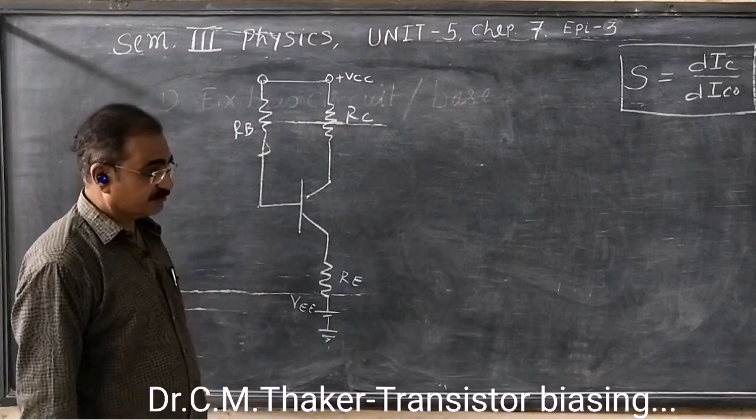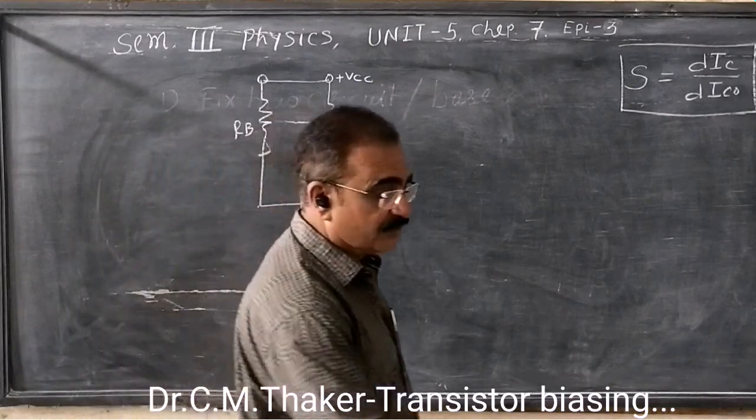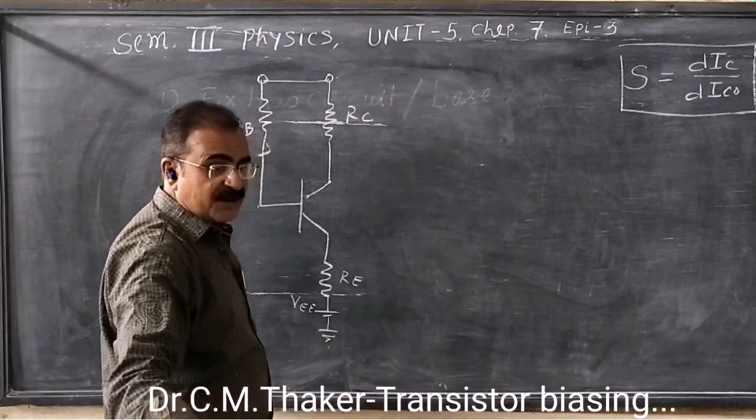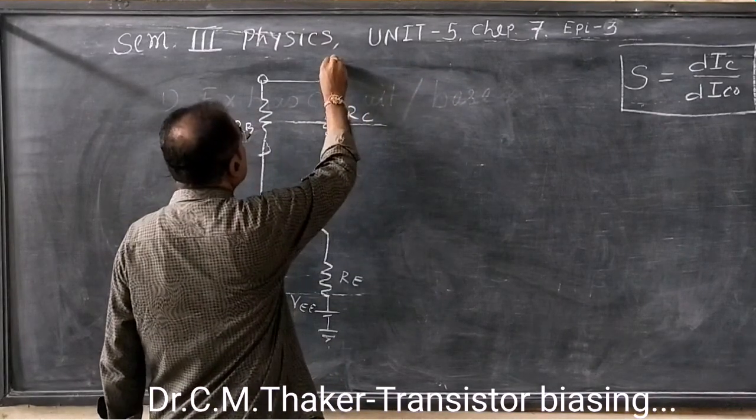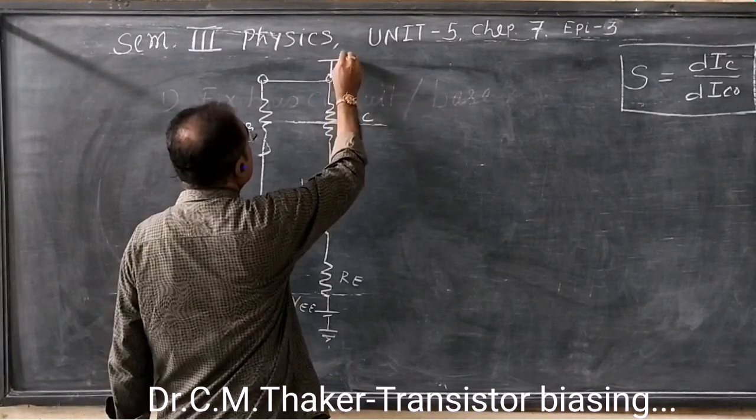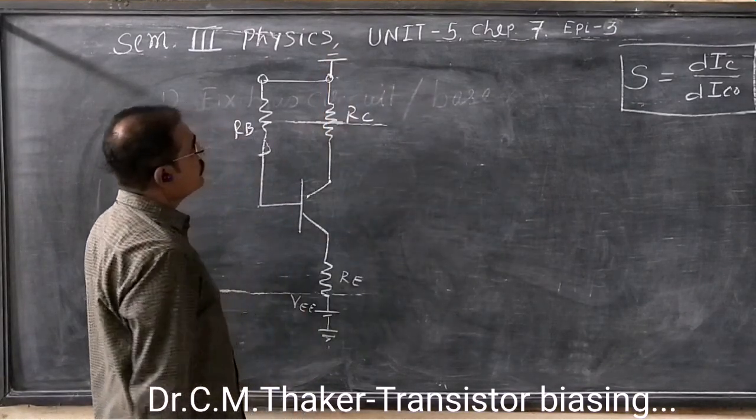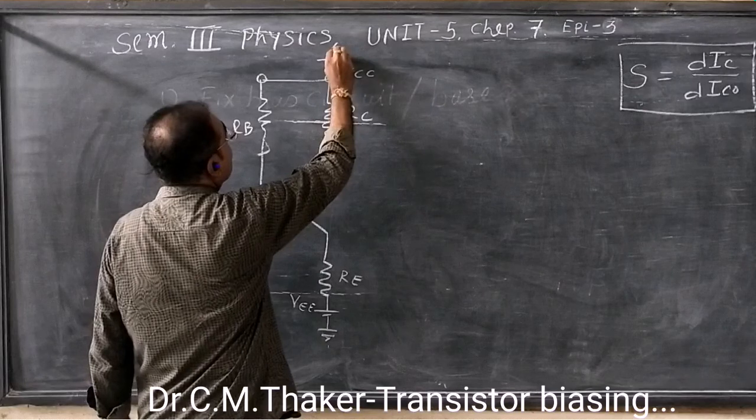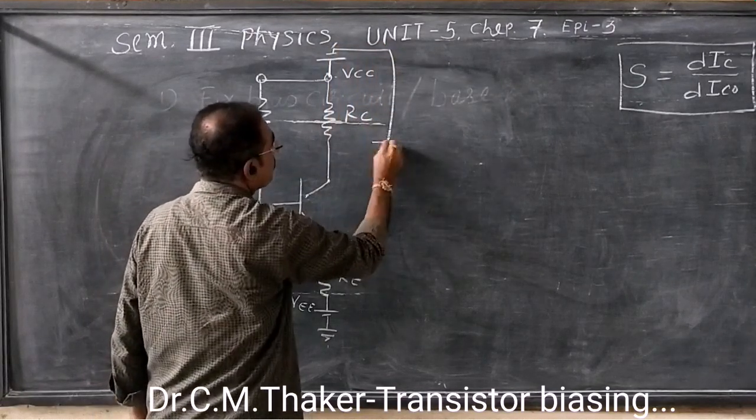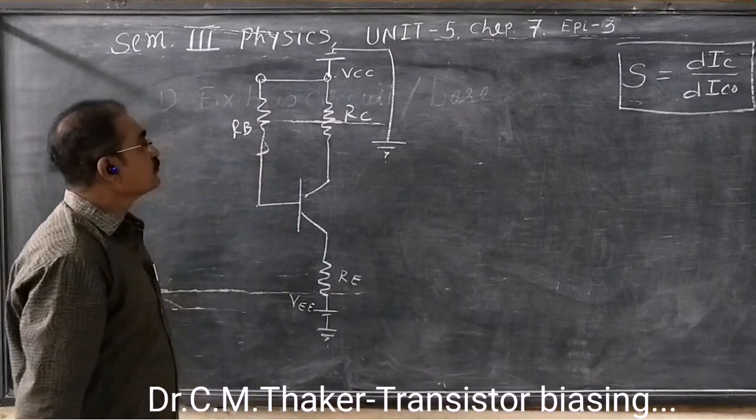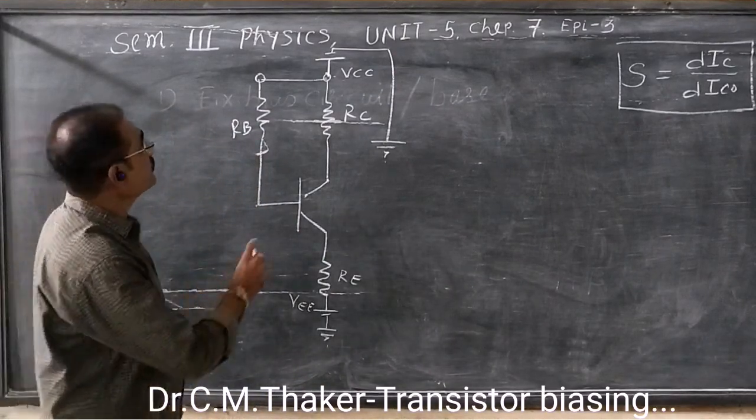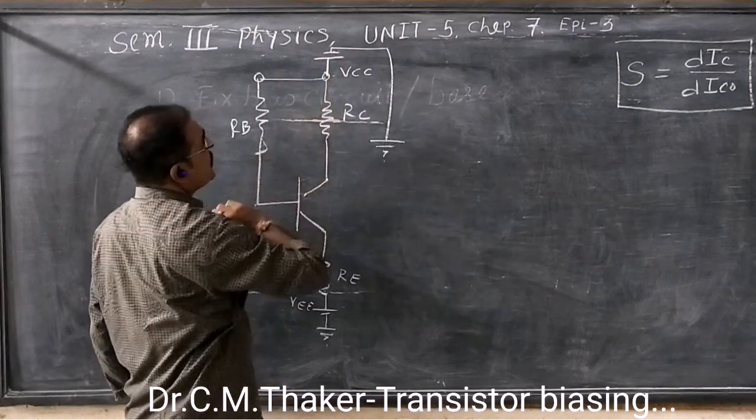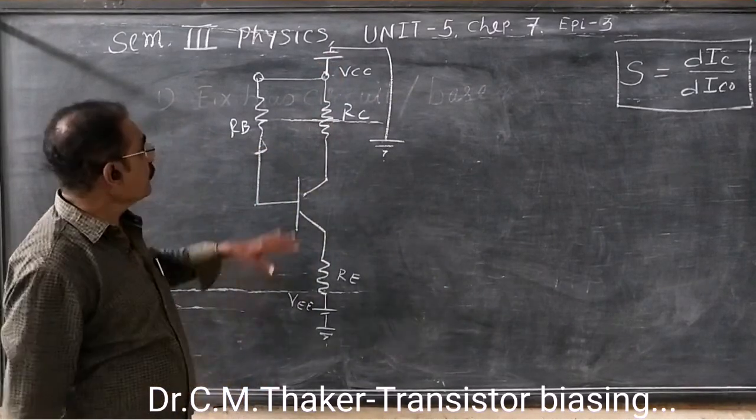Now, this is VEE and suppose this is VCC. You can mention like that. This is VCC, ground. This is negative terminal of the VCC or VB terminal is connected to RC.